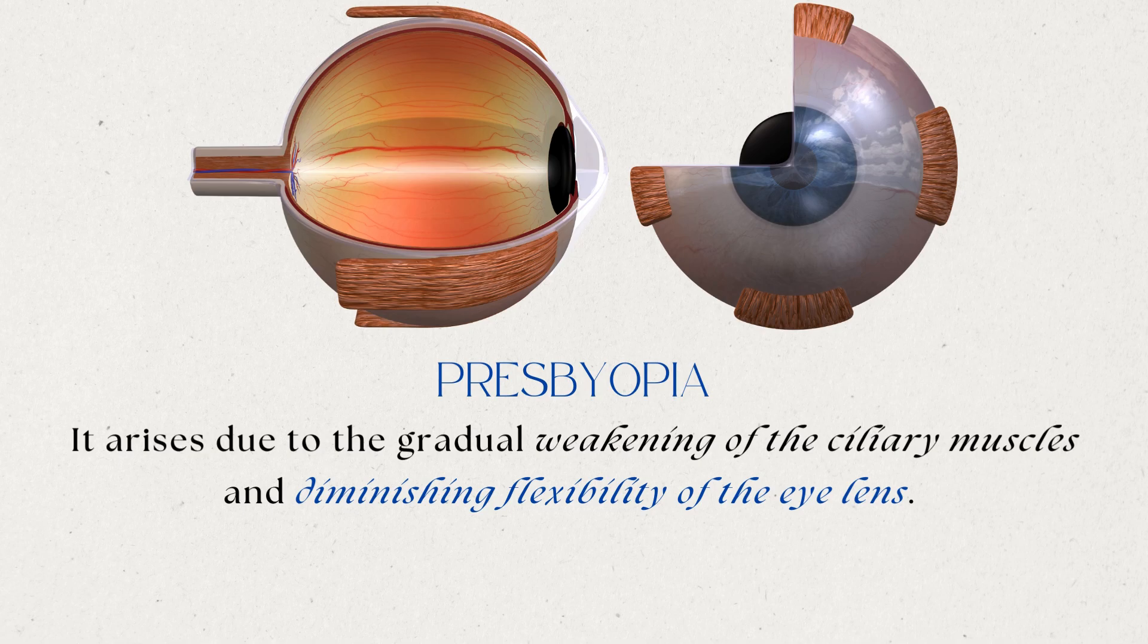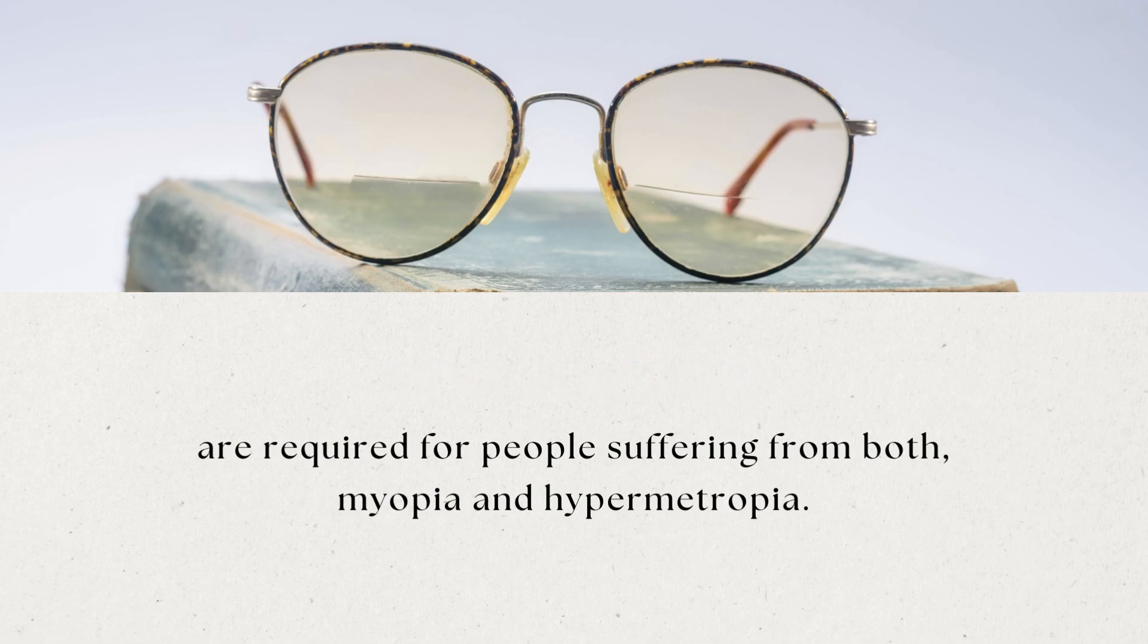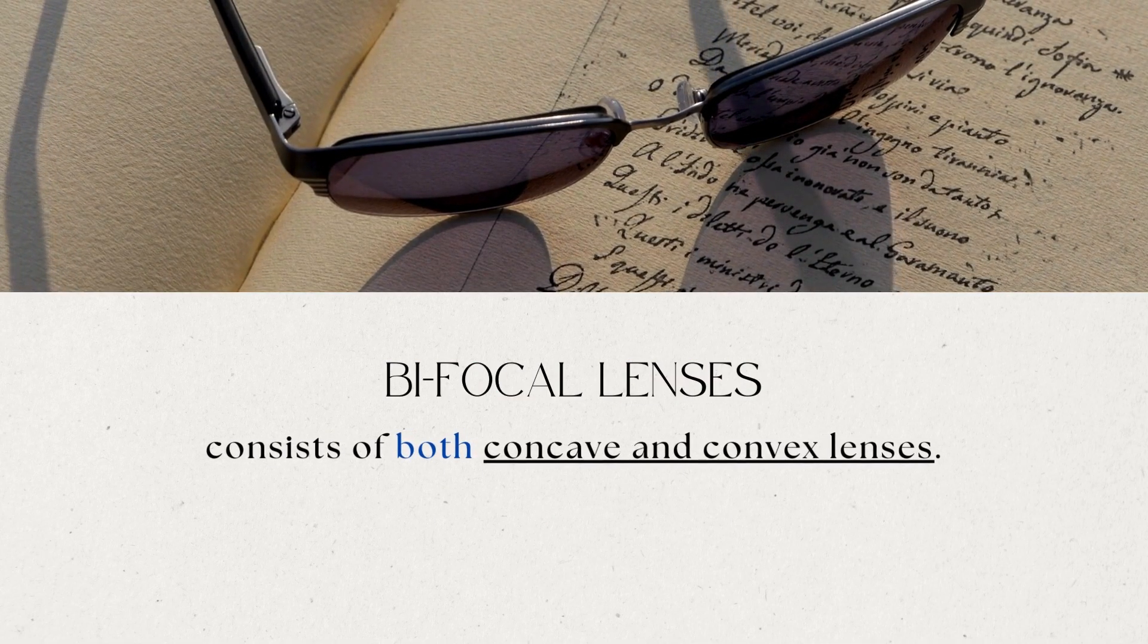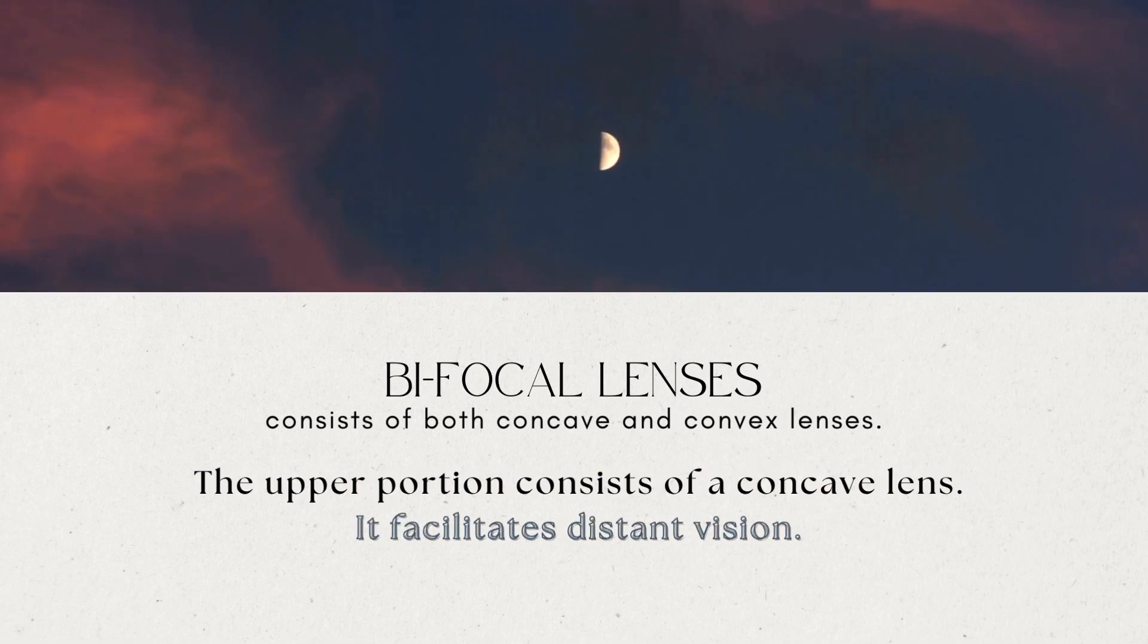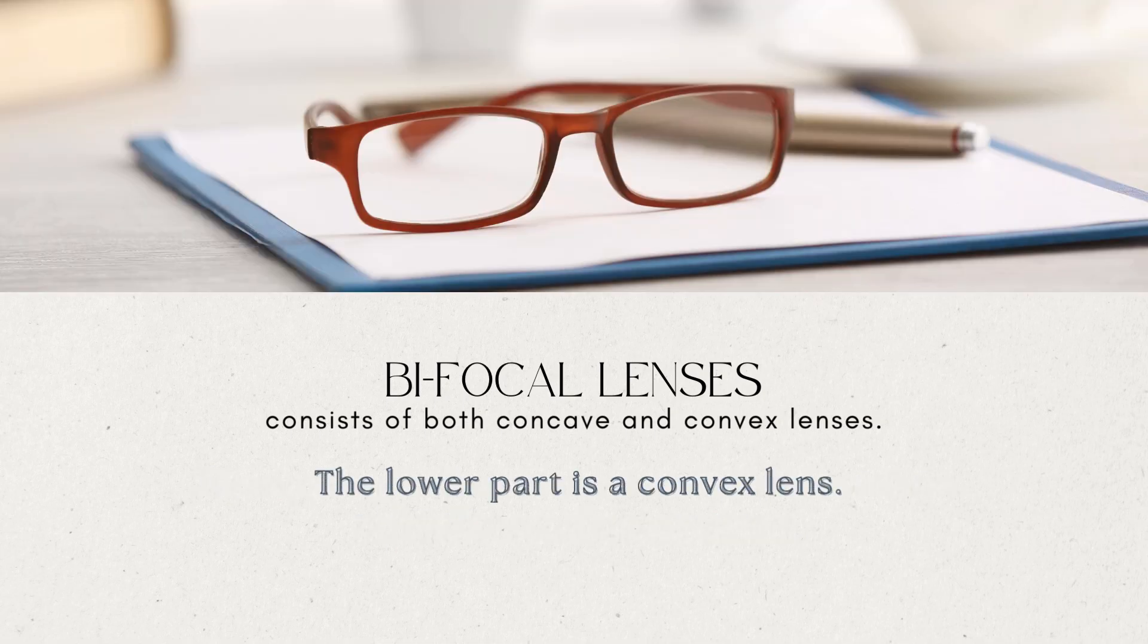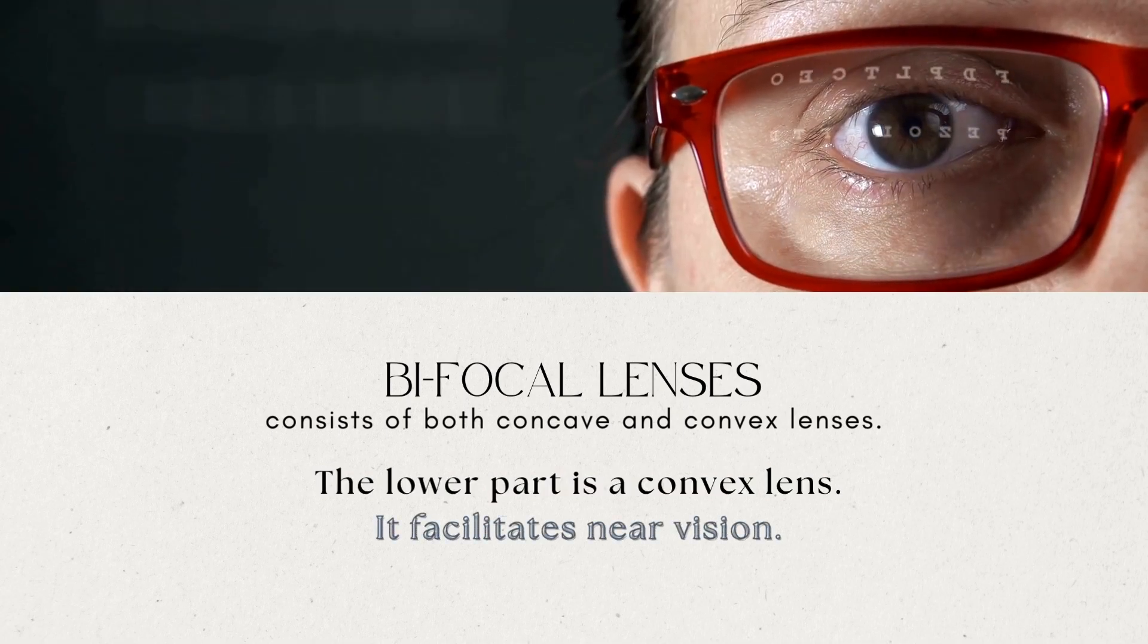Sometimes a person may suffer from both myopia and hypermetropia. Such people often require bifocal lenses. A common type of bifocal lenses consists of both concave and convex lenses. The upper portion consists of a concave lens, which facilitates distant vision. The lower part is a convex lens, which facilitates near vision.